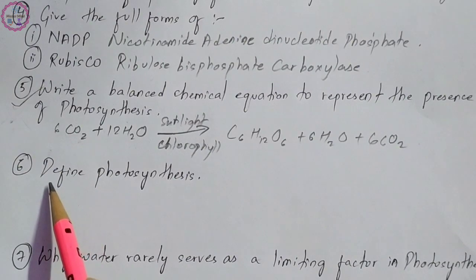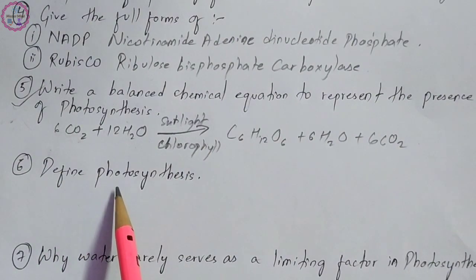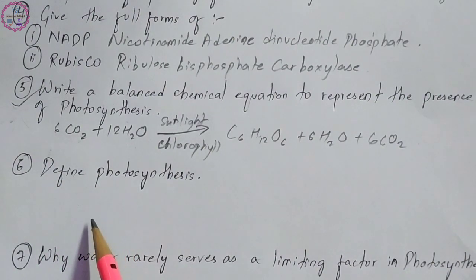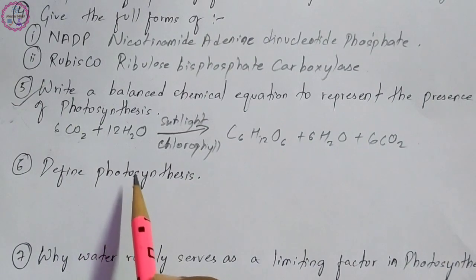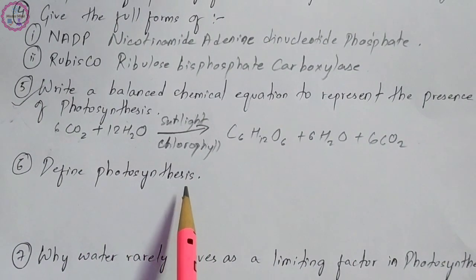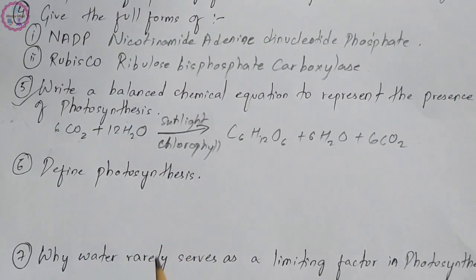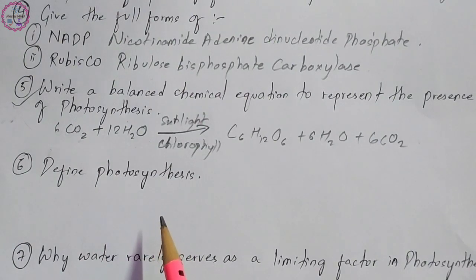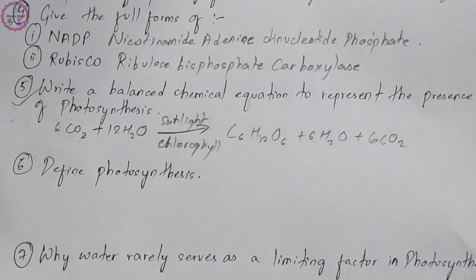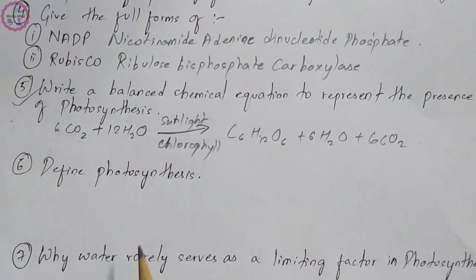Question number six is: define photosynthesis. Photosynthesis is defined as a biochemical process by which green plants containing chlorophyll manufacture their own food using carbon dioxide and water as raw materials in the presence of sunlight.